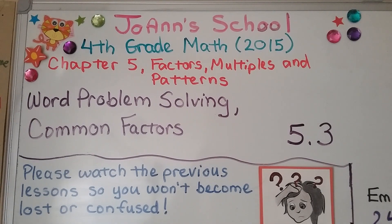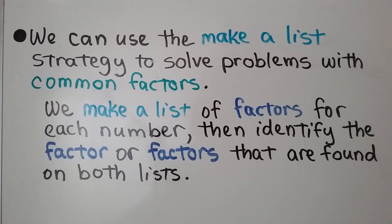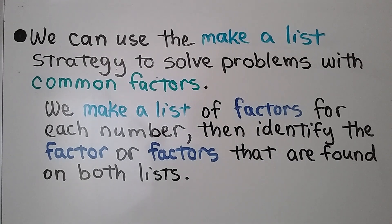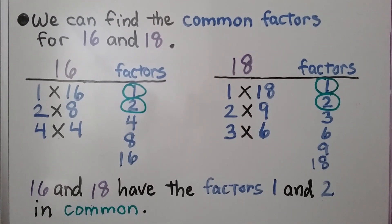Lesson 5.3: Word Problem Solving - Common Factors. We can use the make-a-list strategy to solve problems with common factors. We make a list of factors for each number, then identify the factors found on both lists. We can find the common factors for 16 and 18. For 16, we think: 1 times 16,